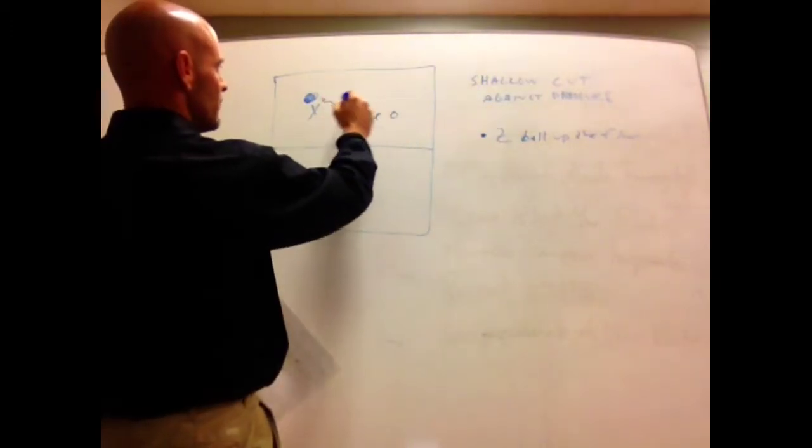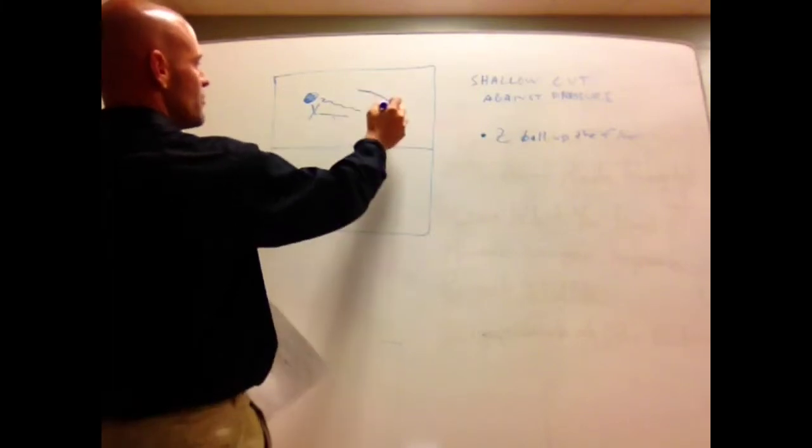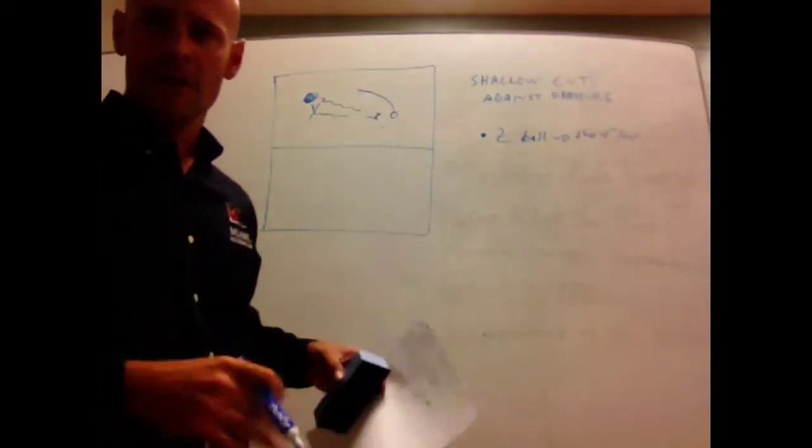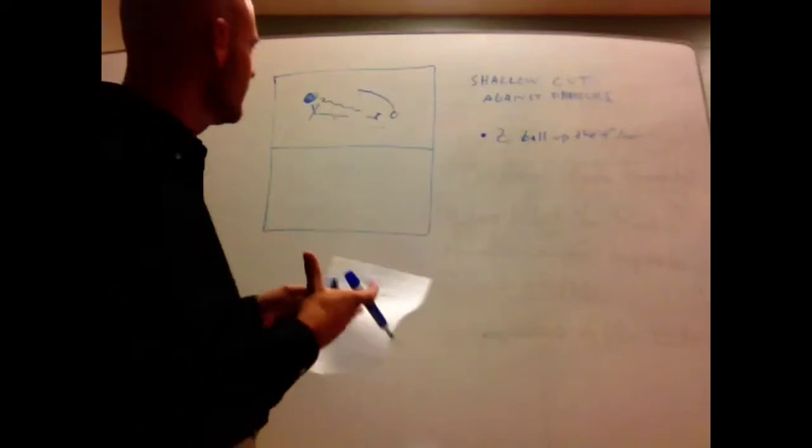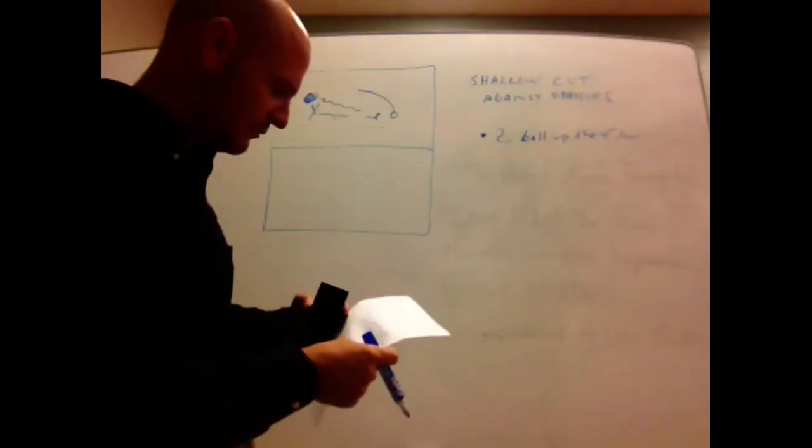Same situation, dribbler comes over, you can make a shallow cut this direction to where the pass can go backwards. Again, your players have to be aware of where they're at in the ten second count, but that's another way to create a passing lane opportunity using the shallow cut.